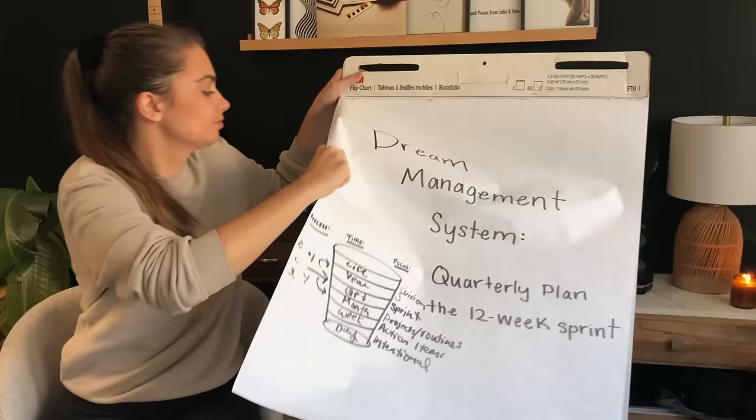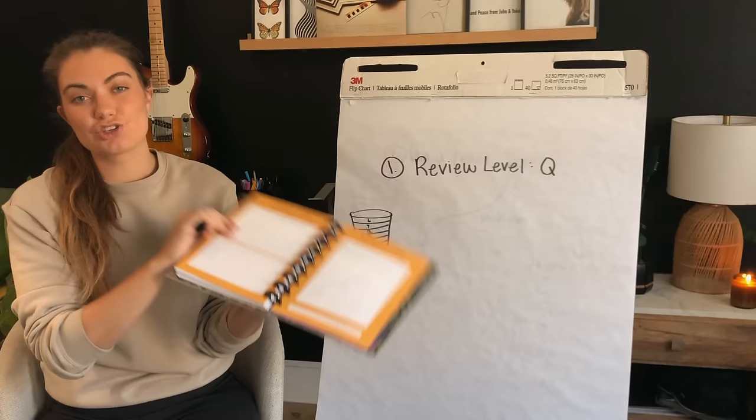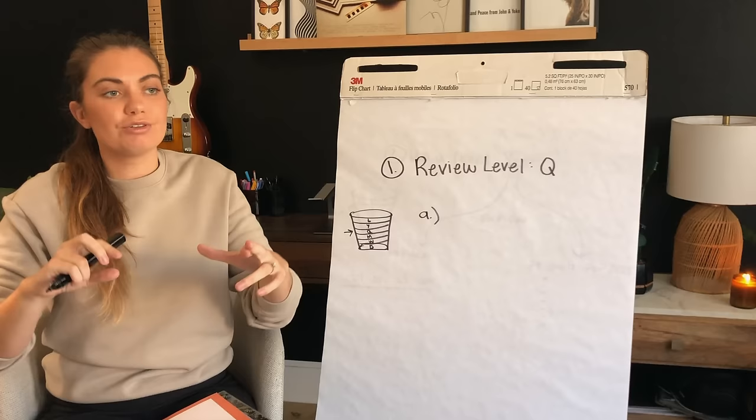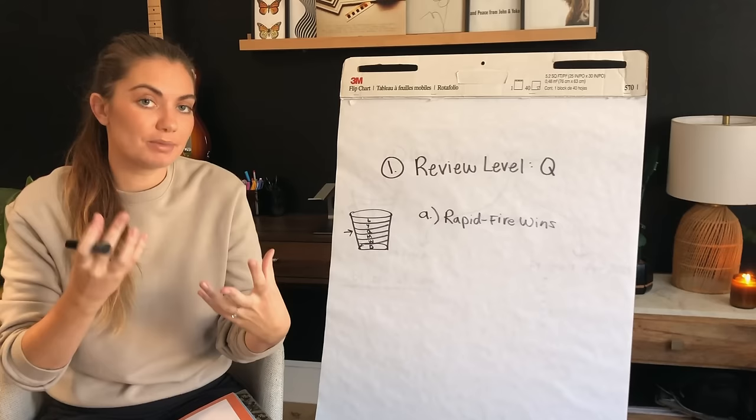The first step for any type of planning — in this case quarterly planning — is to review and focus on the level you're currently on. Review the previous quarter. I have a few key questions from the quarterly planning section of the planner I made. The first question is rapid fire: think of everything you've achieved in the past quarter. You need some way to focus on your wins, what things really went well last quarter. The next questions I like to meditate on are: what type of person have I been becoming?